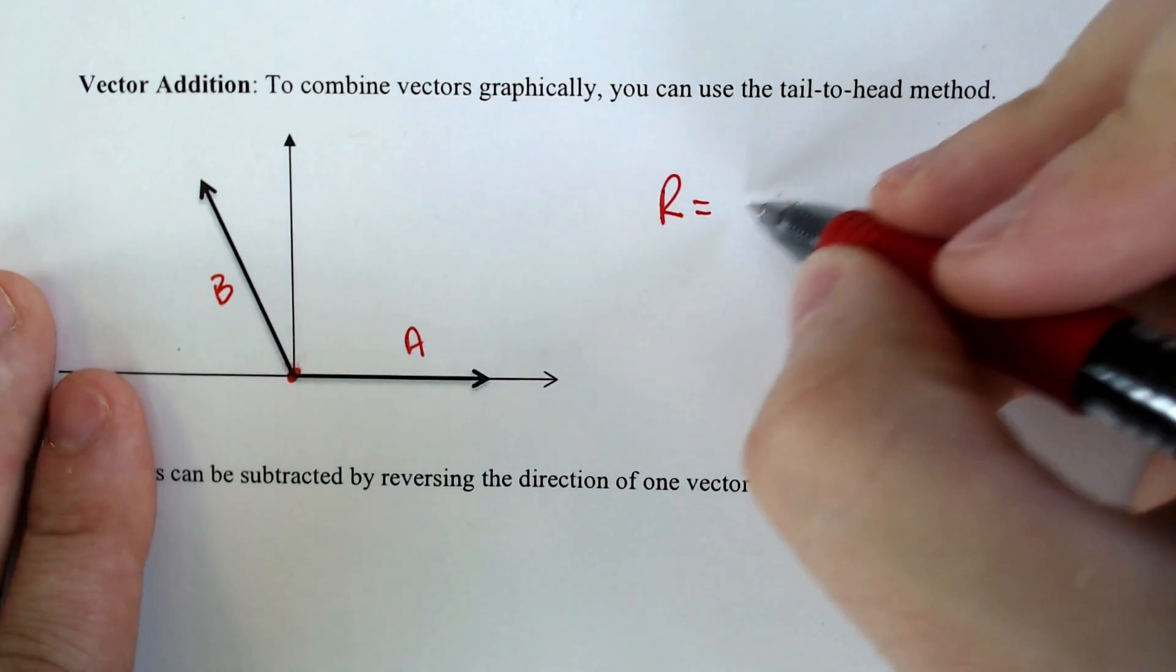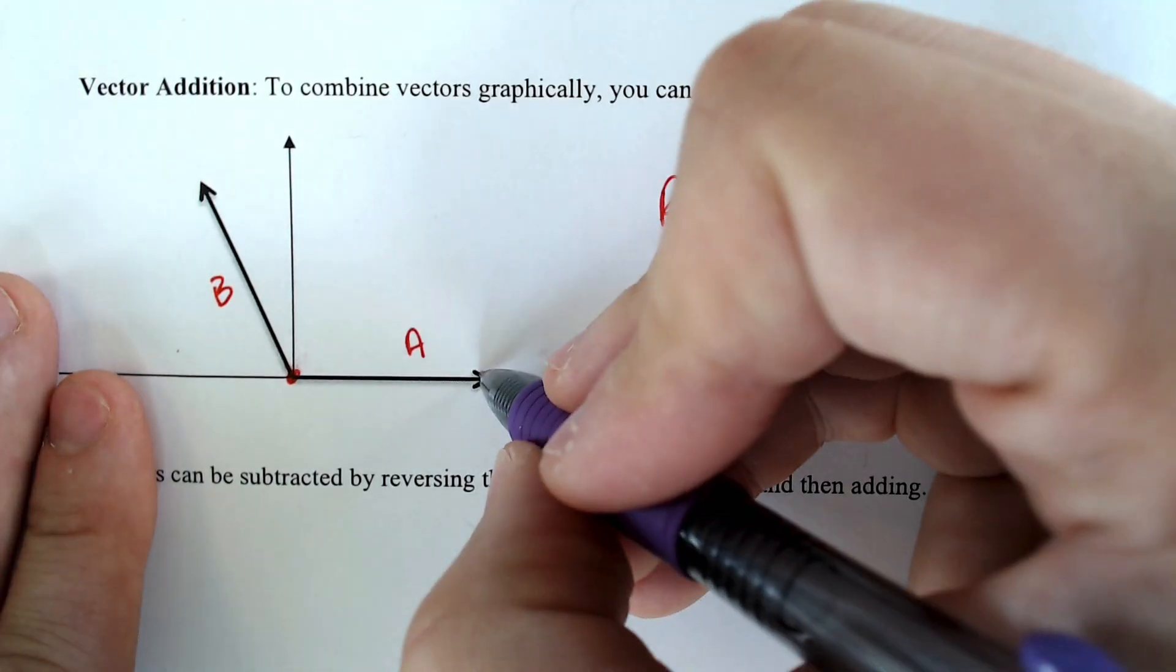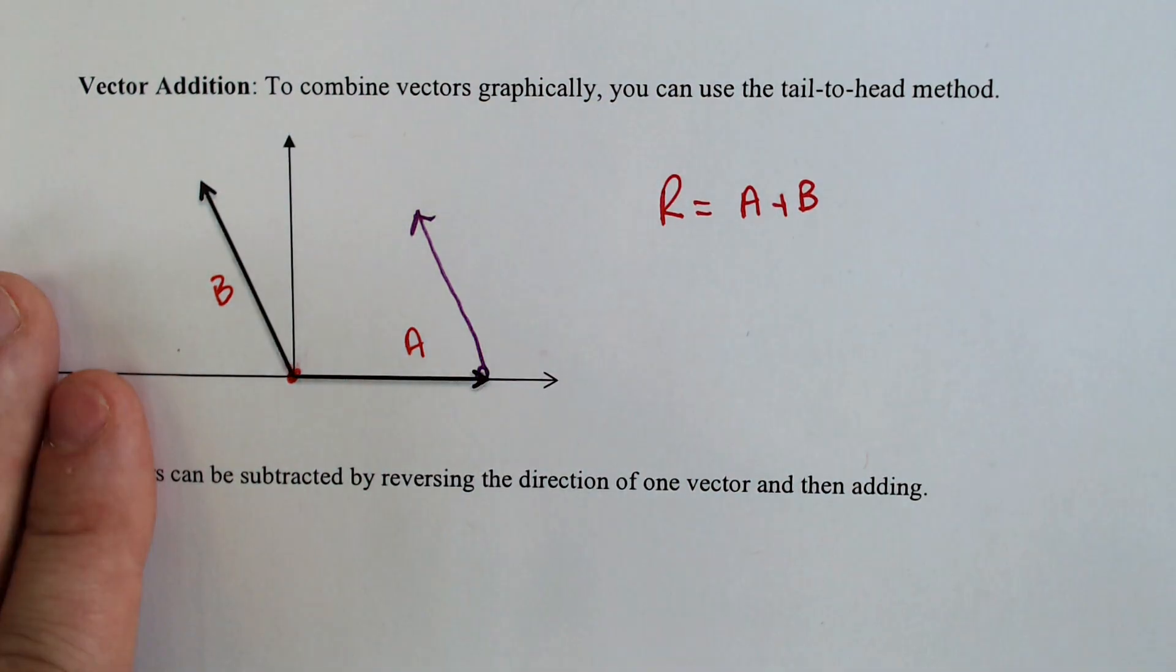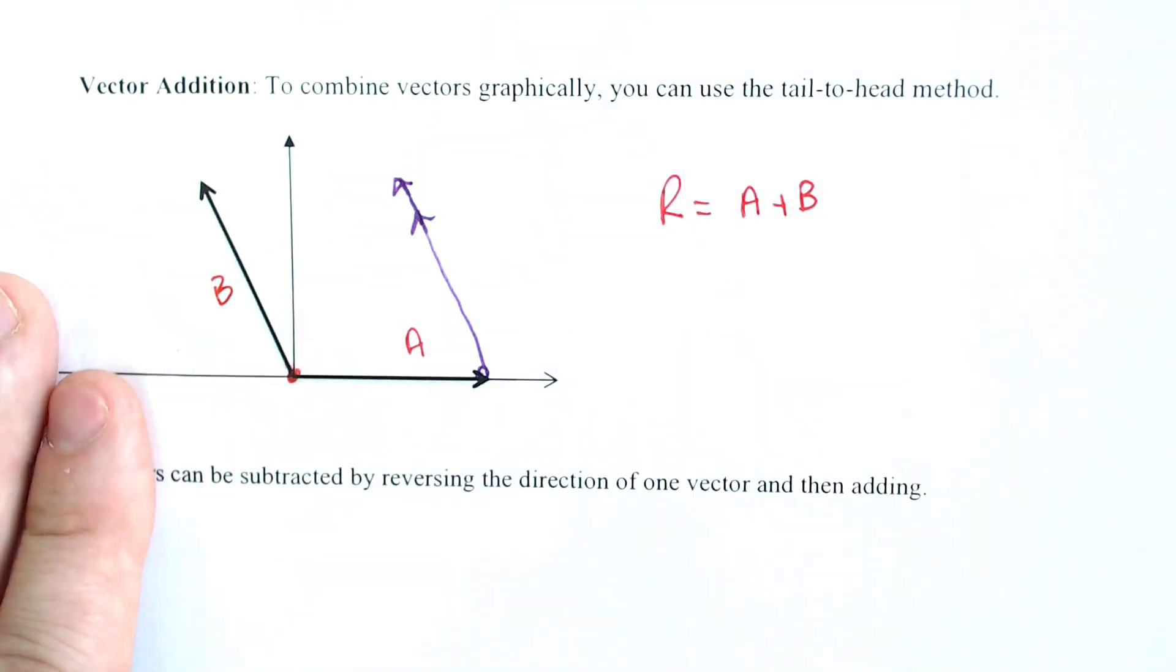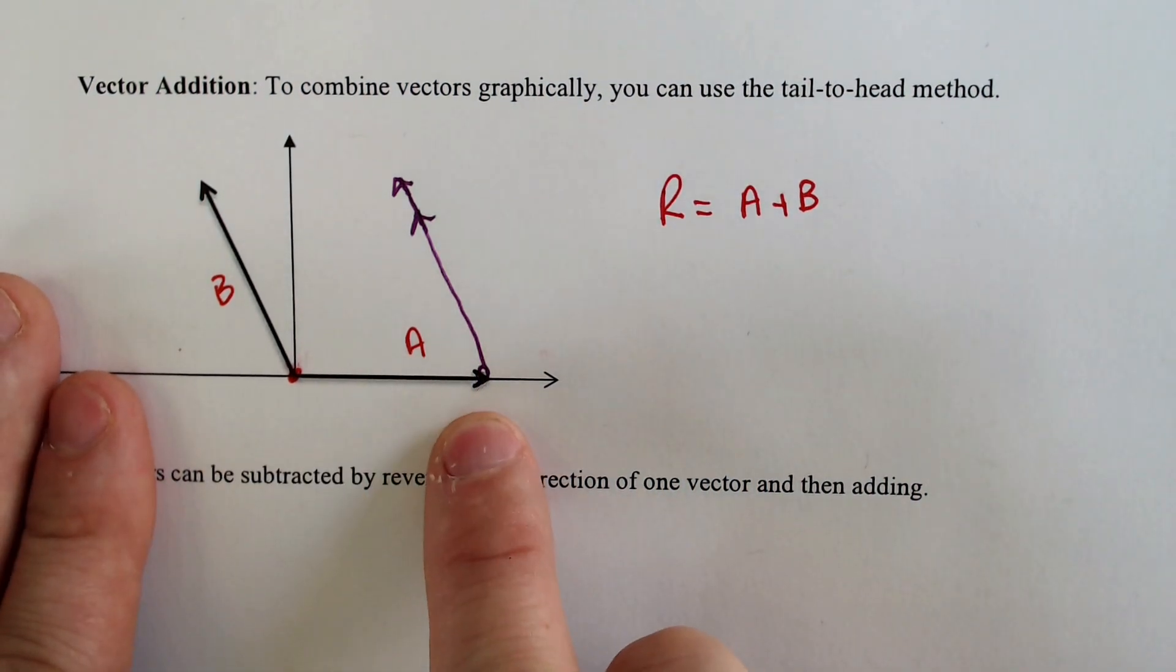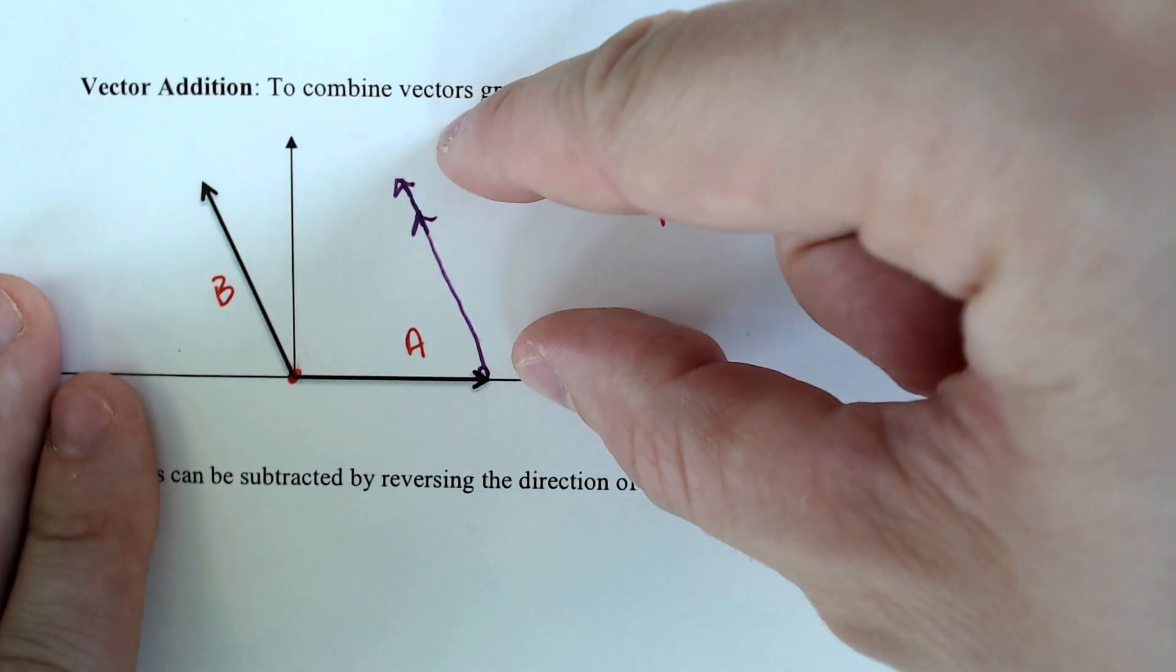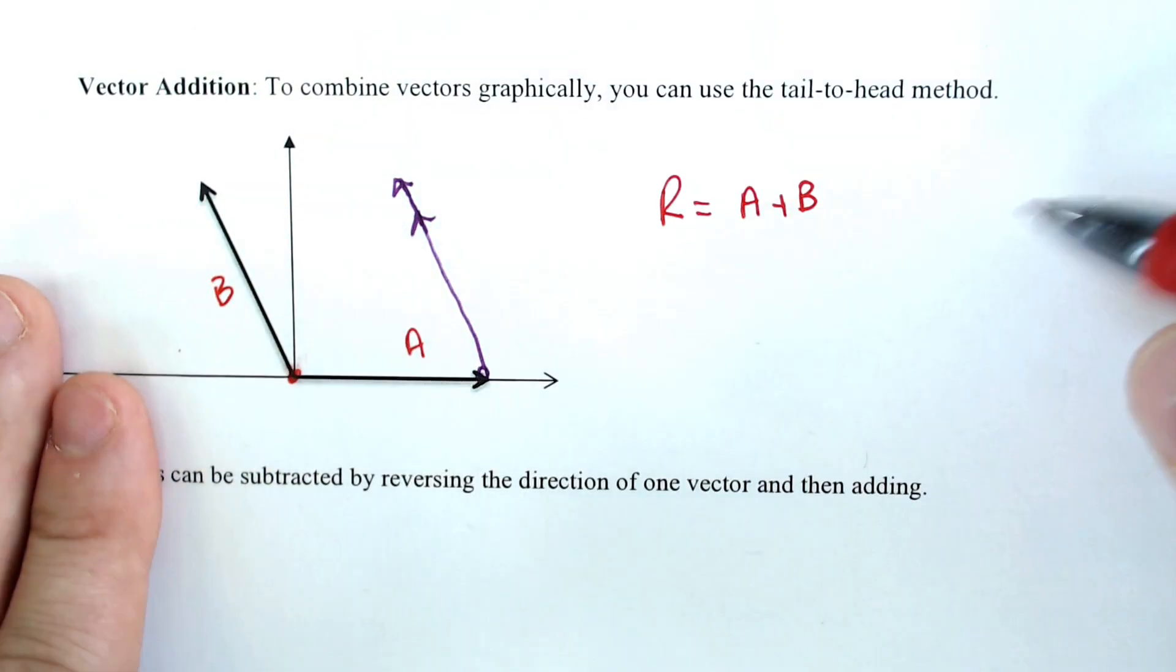Let's call this vector A and this vector B. The resultant of A plus B would be if you were to take B and move it over here to A, make sure it is the same length. Mine's not quite long enough. Same length. There we go. A plus B would be A. You would do A and then you would take the tail of B and put it on the head of A and you would get the resulting vector, which would be this right here.